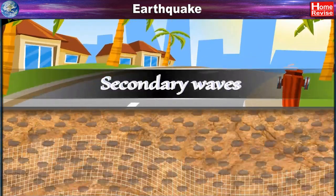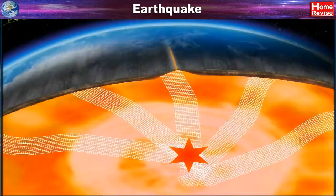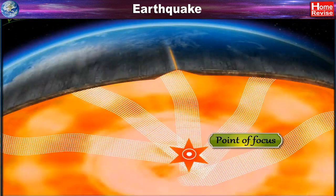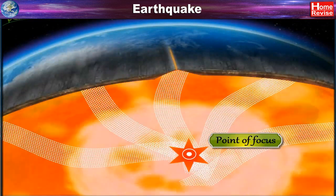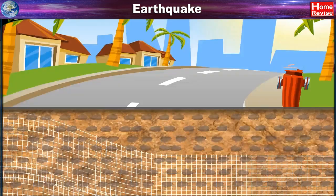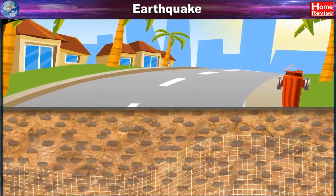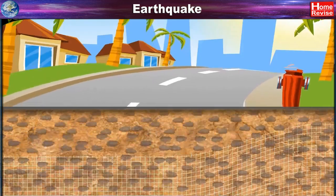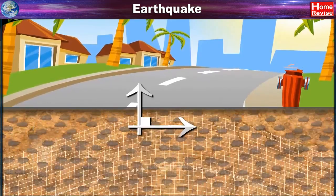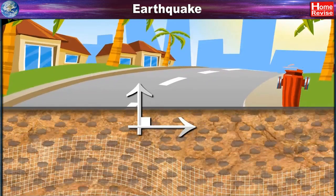Secondary waves are the waves arriving at the surface after the primary waves. These waves also radiate in all directions from the focus of the quake. Due to these waves, the grains in the rocks move up and down, perpendicular to the direction of movement of the waves.